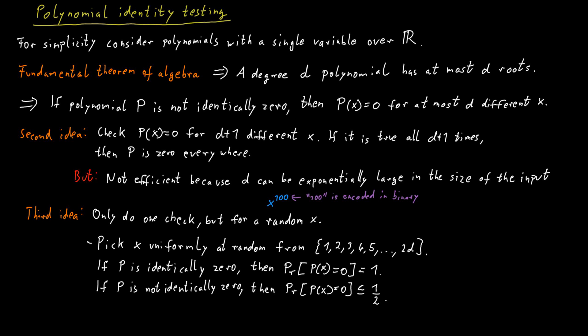This is already the entire idea behind the algorithm. If the polynomial is identically 0, we will detect this for sure because we pick a random value for x, we plug this in, we evaluate the polynomial, and it will report to be equal to 0. If the polynomial is not identically 0, then at least half the values we pick x from at random will tell us so. So the error probability here is bounded by a half.